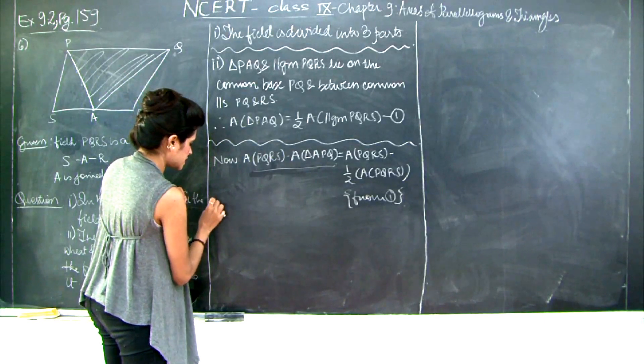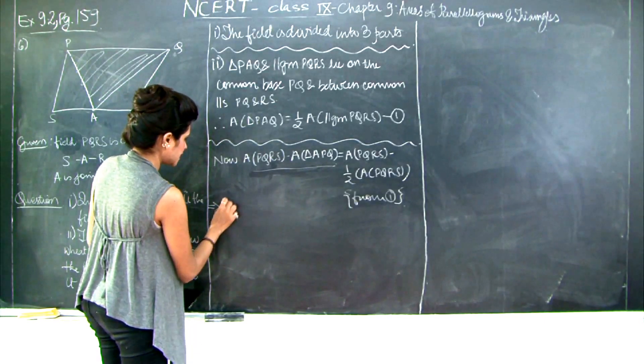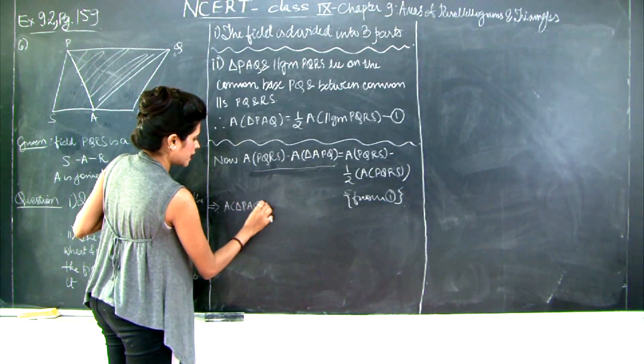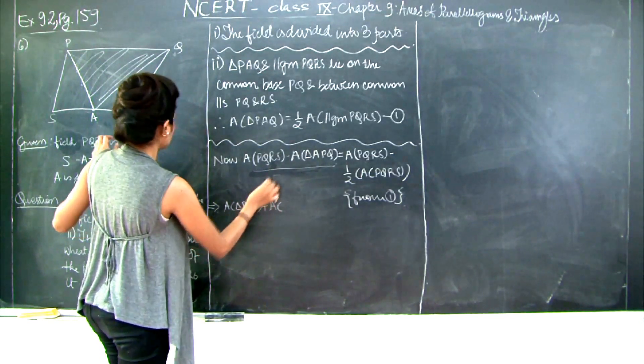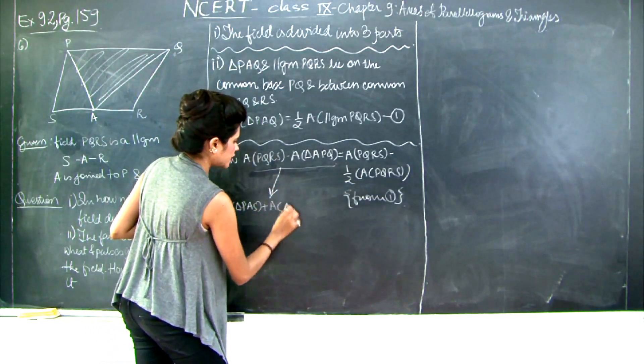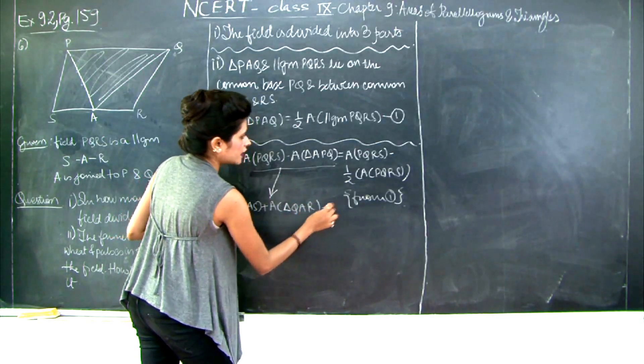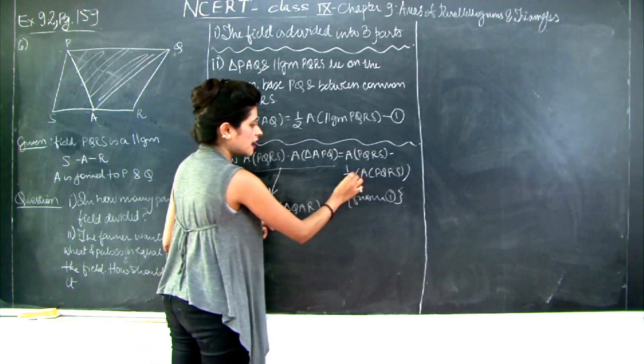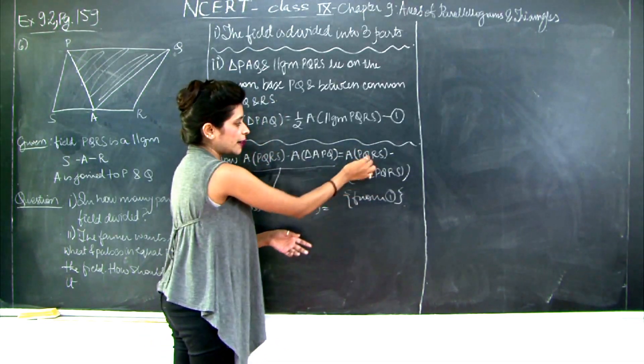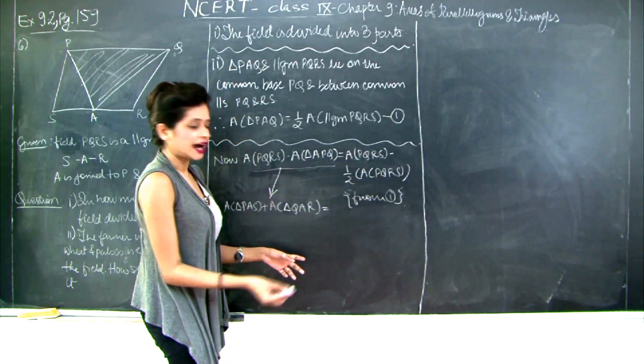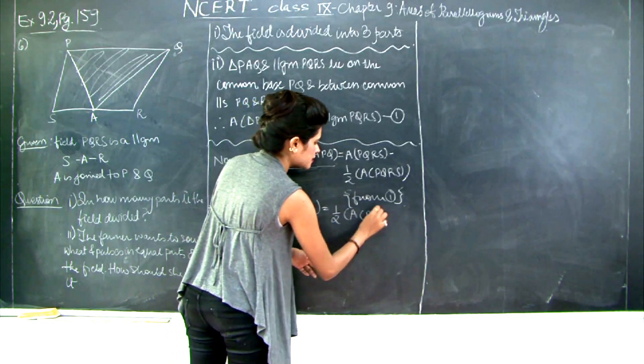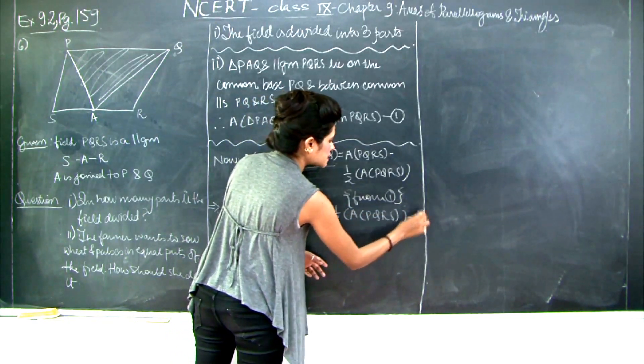So let's do this. This is equal to, this implies that area of triangle PAS plus area of QAR. Now area of PQRS minus half area of PQRS is, this is 1 minus half, right? 1 apple minus half apple is going to give me half an apple. So this is half area of PQRS. Let's mark this as equation 2.